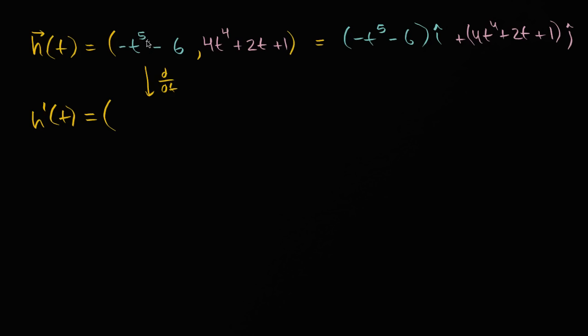Well, we're going to use the power rule right over here. Five times the negative one, or times the negative, you're going to get negative five, times t to the five minus one power. So t to the fourth power. The derivative with respect to t of negative six, well, that's just zero. So that's the rate of change of the x component with respect to t.